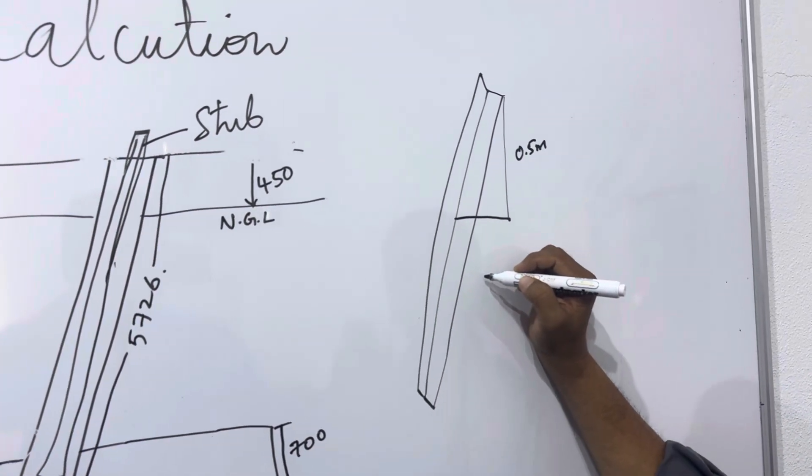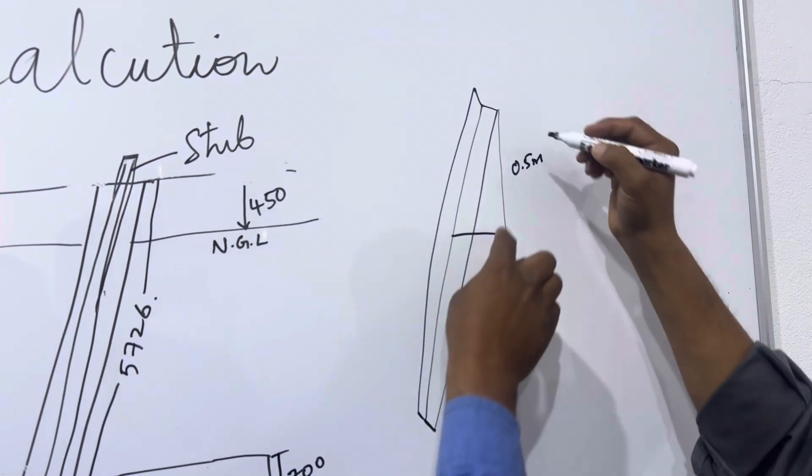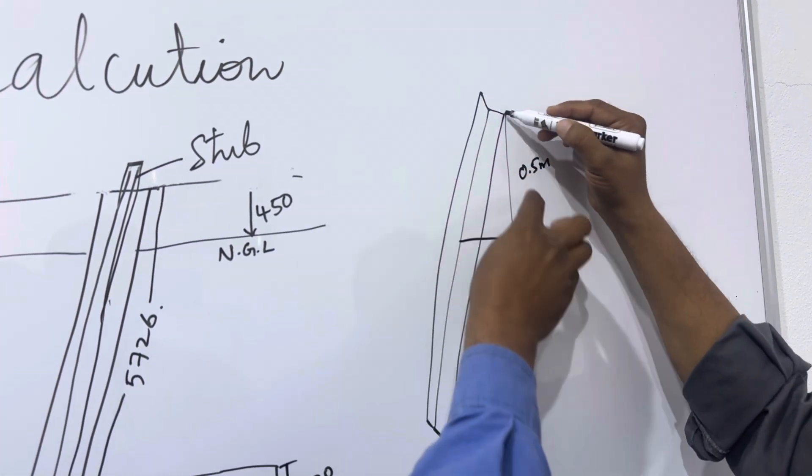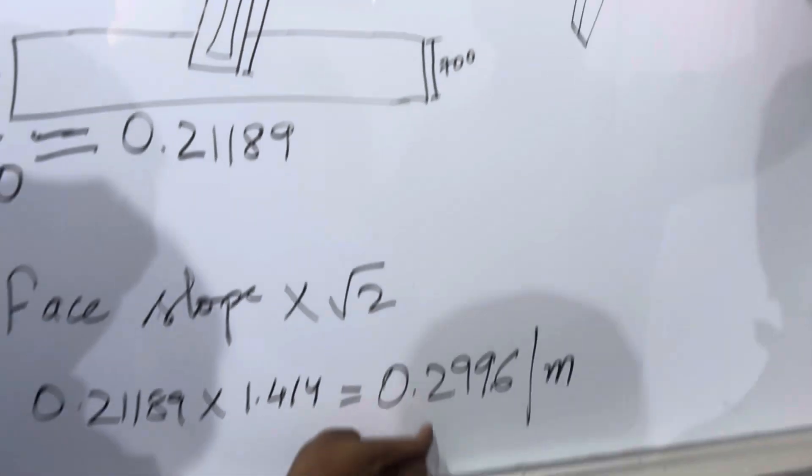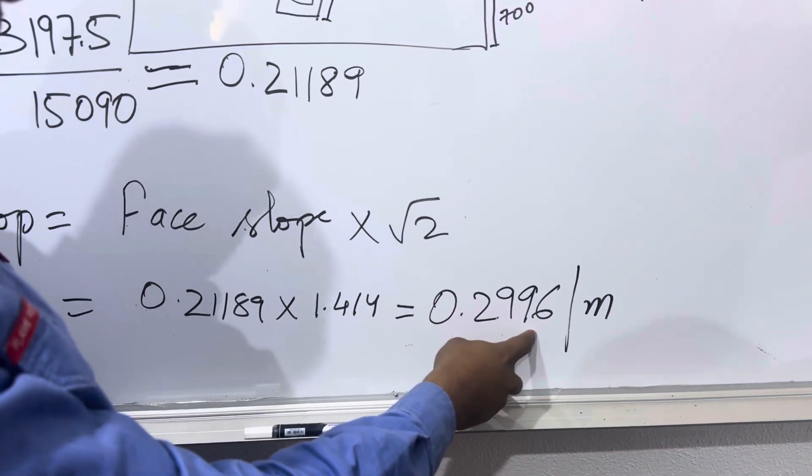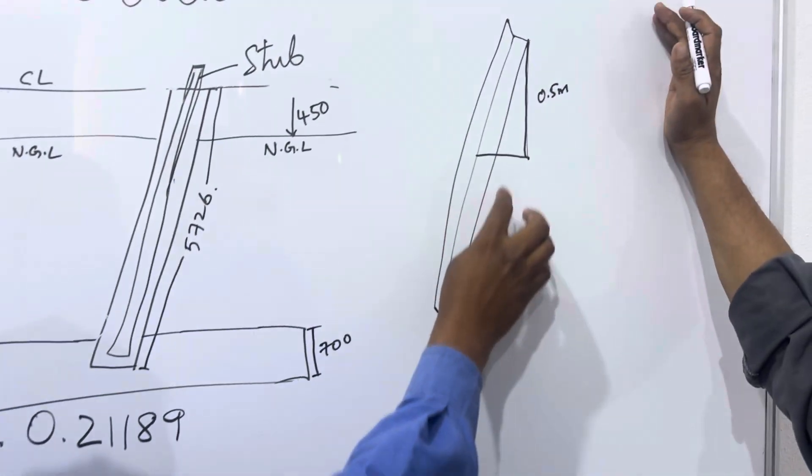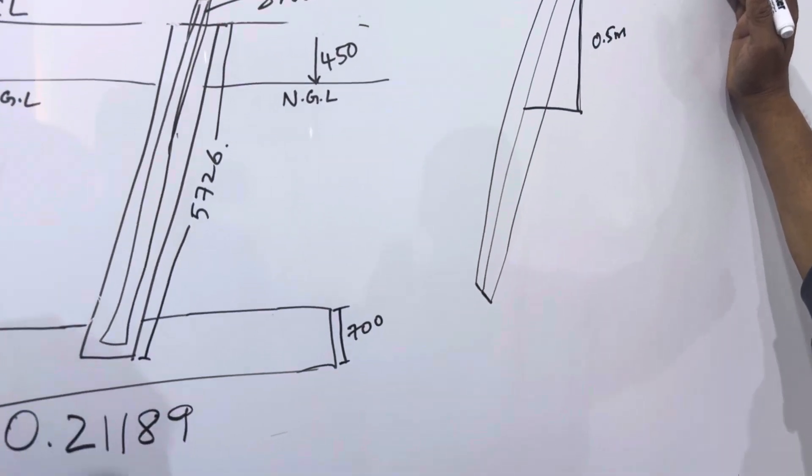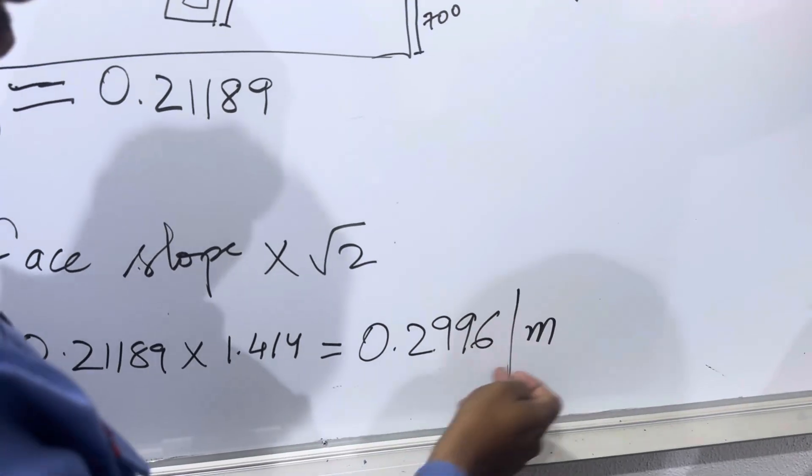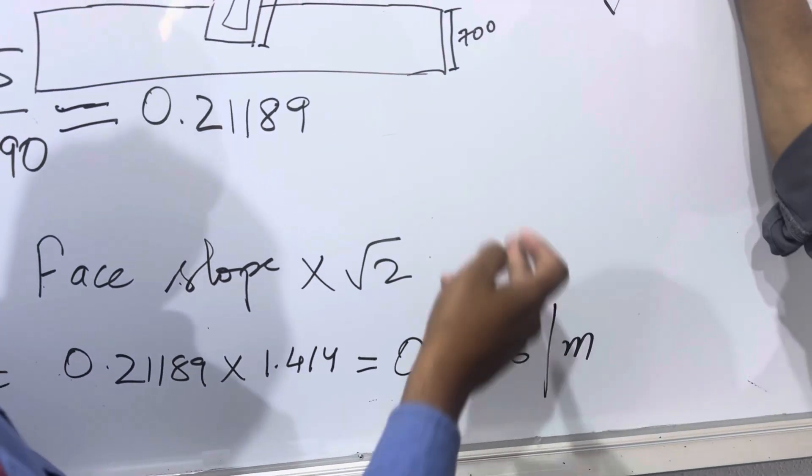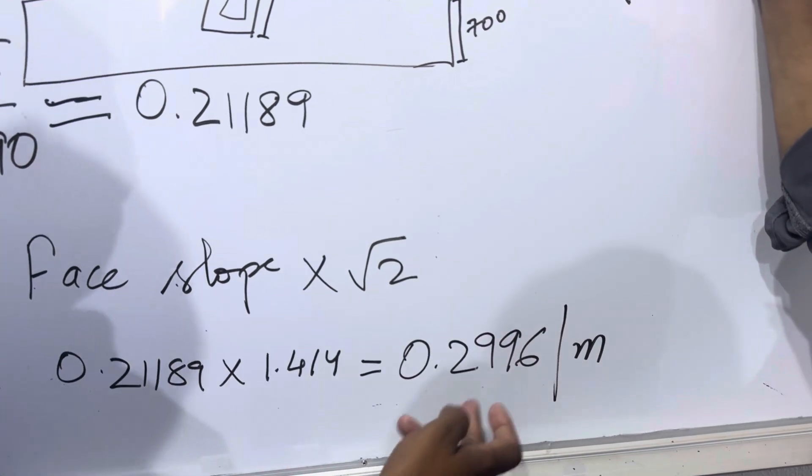So here we will take up to one point, this is suppose for example this is one meter slope 0.2996. So we are marking on the ground only half meter, so for half meter we can divide this, divided by 2, 0.2996 divided by 2 is equal to.